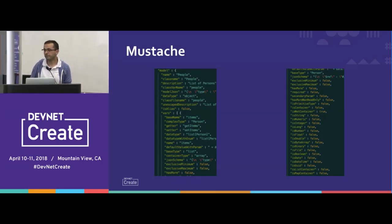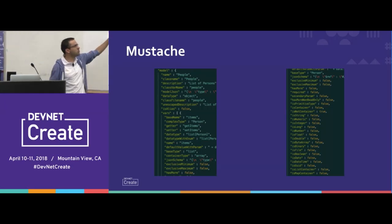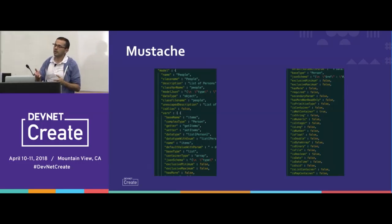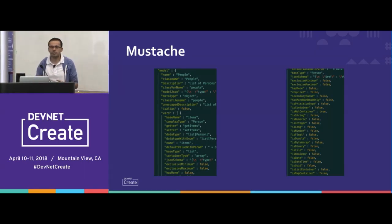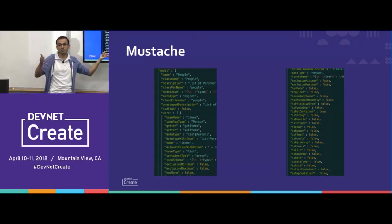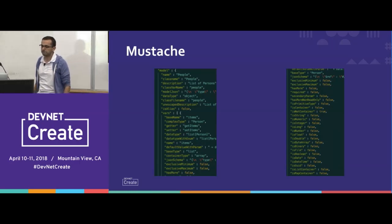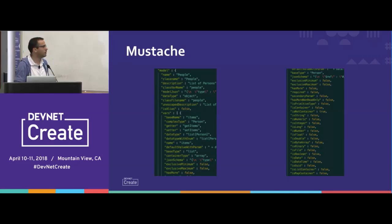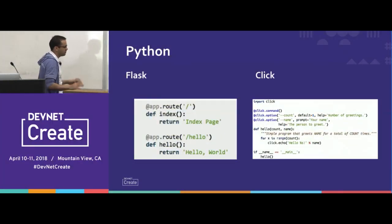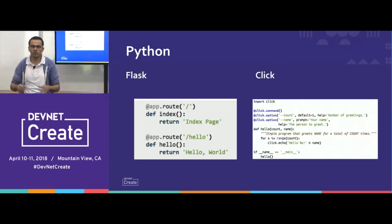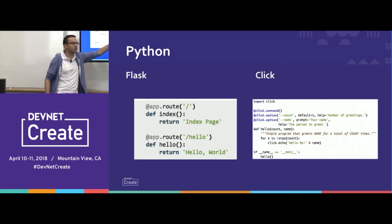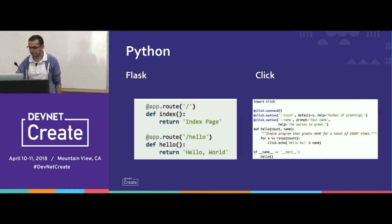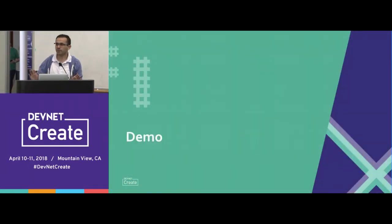It supports Mustache as the template language. When we say it's logic-less, it's not like you can do 'if this is less than five, then do that,' but you can use 'has more' to figure out if there are more parameters, and 'if this is the last parameter, then set this code.' Finally, just for the proof of concept here, I'm going to use Flask — a Python library to generate microservices or backends — and Click, again a Python library, to generate CLIs. Now we're done with the slides and we jump to the demo.